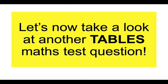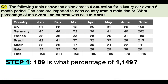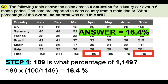This time we're going to take a look at another table maths test question. Question 9. The following table shows the sales across six countries for a luxury car over a six-month period: January, February, March, April, May, June. The cars are imported to each country from a main dealer. What percentage of the overall sales total was sold in April? To tackle this question, step one: 189 is what percentage of 1,149? We need just these two figures — the April total and the overall total. All we do is 189 times 100 divided by 1,149, and we use a calculator to get the answer: 16.4 percent.